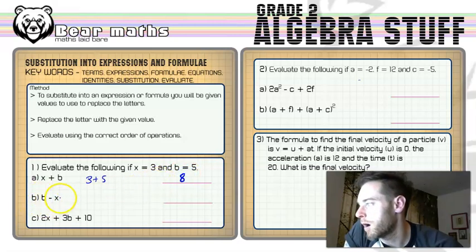In part b, we've got b minus x this time, so that's going to be 5 minus 3. 5 minus 3 is 2.